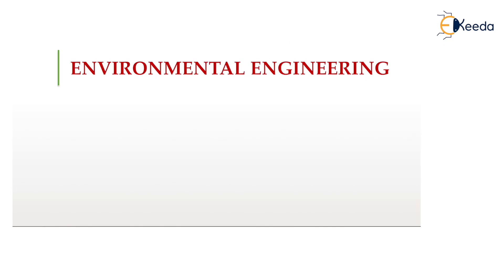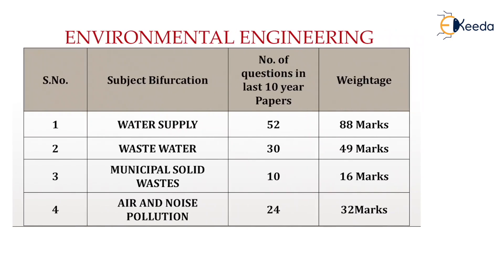The total environmental engineering comprises of four major bifurcations. The first one is water supply engineering, the second one is wastewater engineering, the third one is municipal solid waste, and the last one is air and noise pollution.